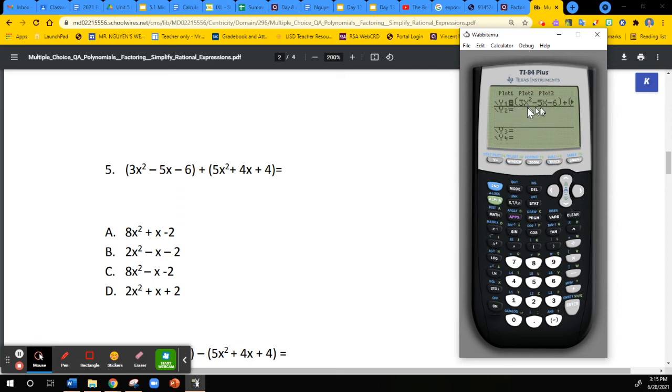Now, test C. C is going to be 8x squared minus x minus 2. Minus x minus 2. Second table. Oh, look. 397, 397, 291, 291, 203. What does that tell you? It tells you that C is the answer. I just tested C, 8x squared minus x minus 2. C is the answer. That's how you do it, guys.